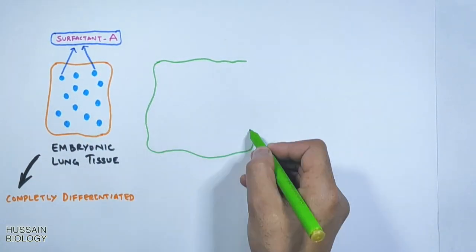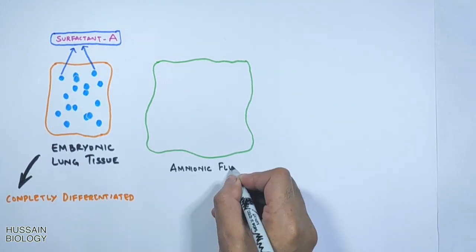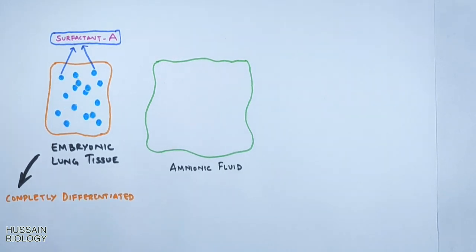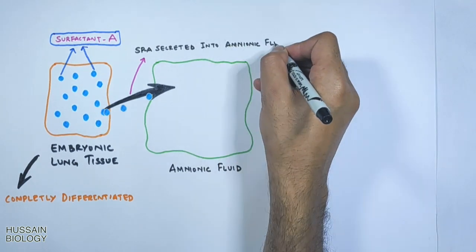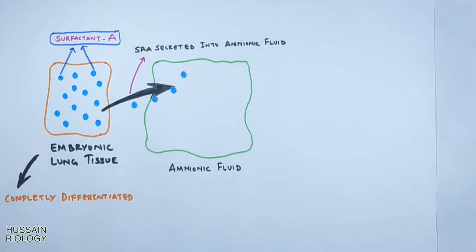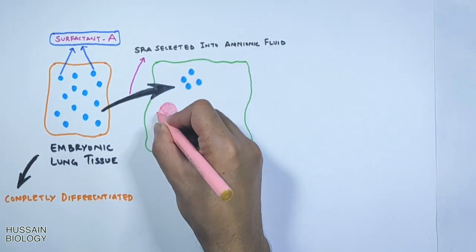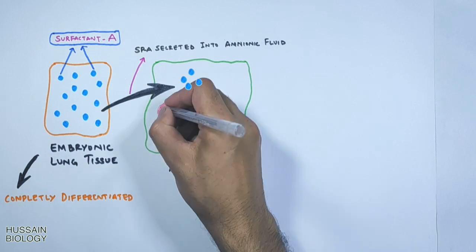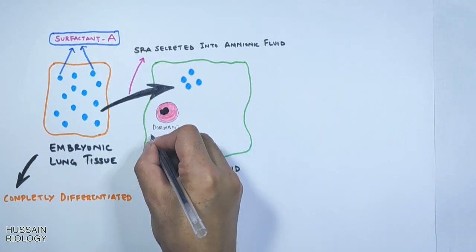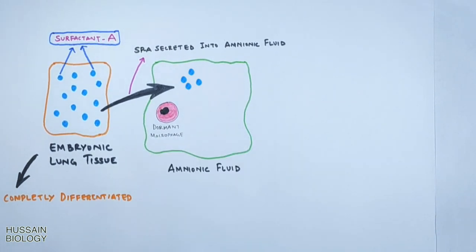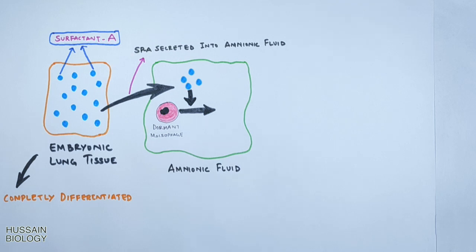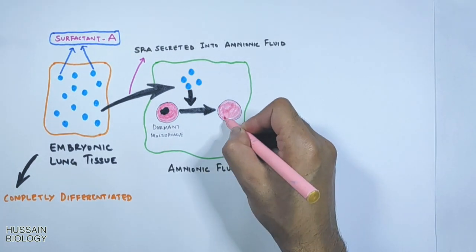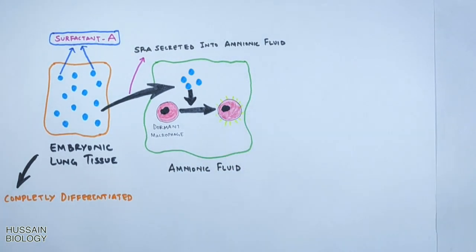As shown in the diagram, on the right we have the amniotic fluid. From the lungs, surfactant protein A (SPA) is secreted into the amniotic fluid. In the amniotic fluid we have inactive or dormant macrophages. The surfactant protein A acts on these dormant macrophages and activates them.